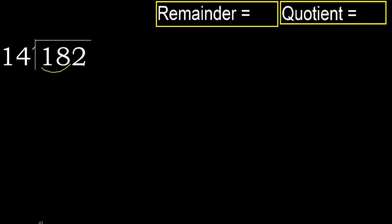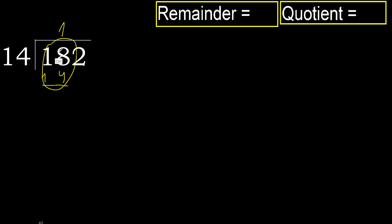With 18, 14 multiplied by which number is nearest to 18 but not greater? 14 multiplied by 2 is 28, which is greater. Multiplied by 1 is 14, which is not greater. So 18 minus 14 is 4. Next.